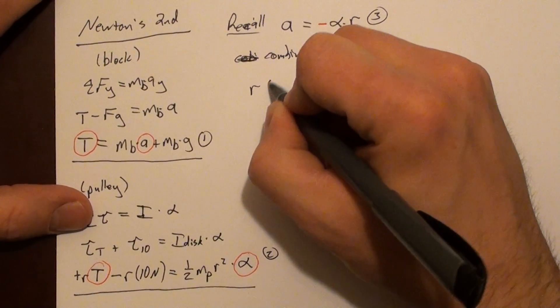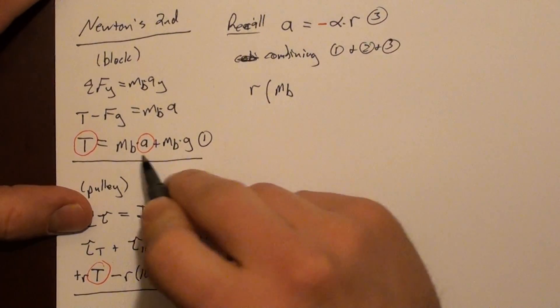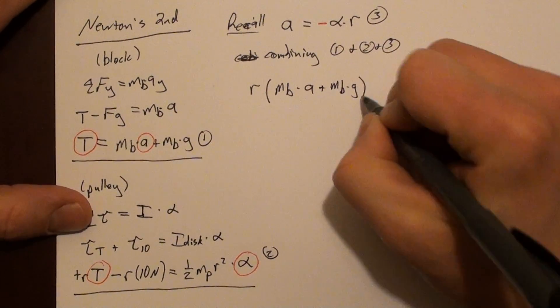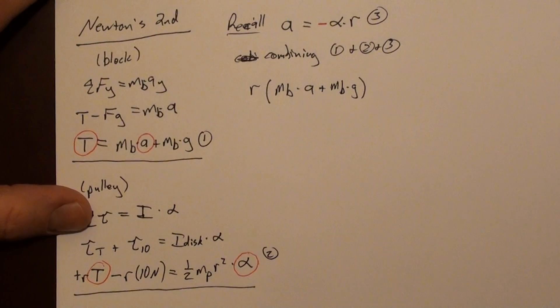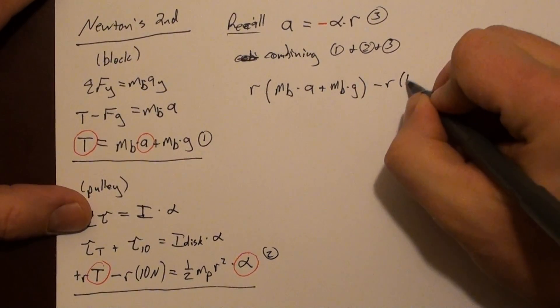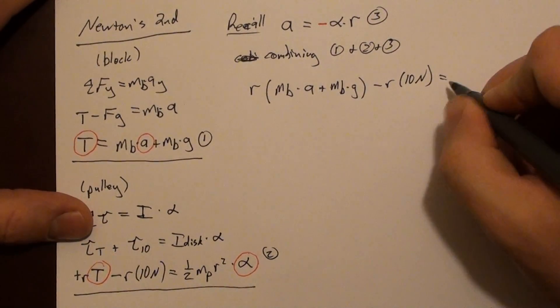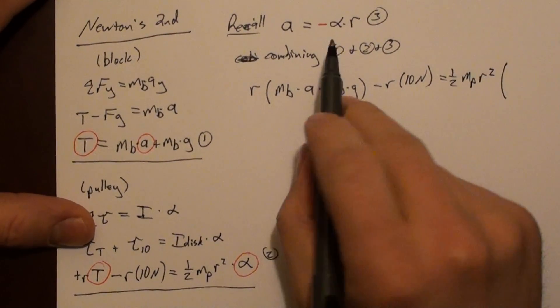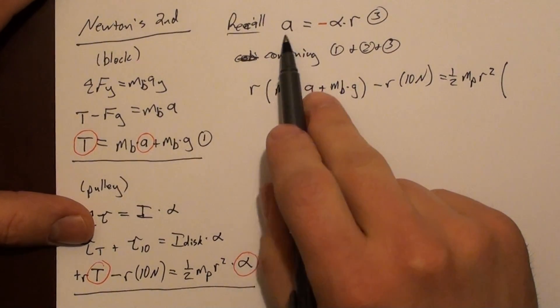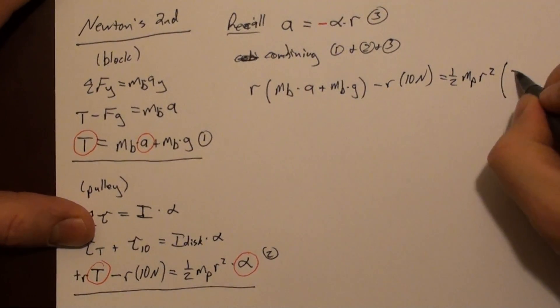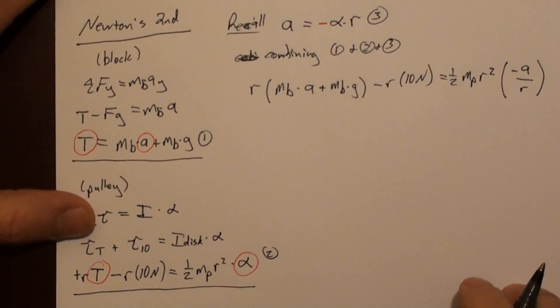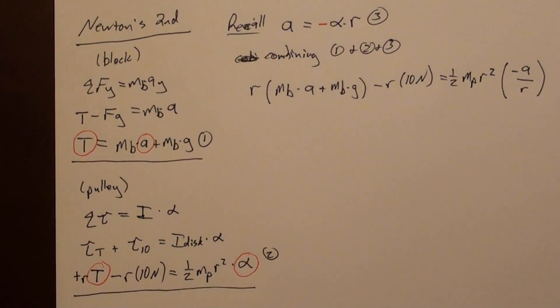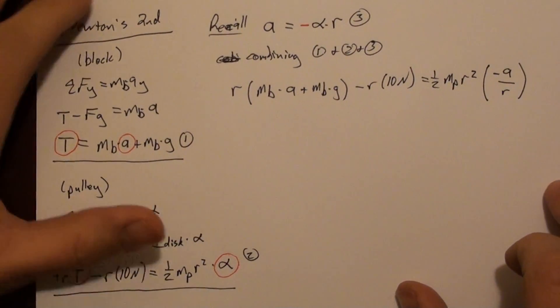So I'll start with this. R times t. t is the mass of the block times a plus the mass of the block times g. Minus r times 10 newtons equals half m pulley r squared times alpha. And alpha is minus a over r. Minus a over r. So again, I'm solving for a. And that's the only thing I don't know in this equation, so that's good.